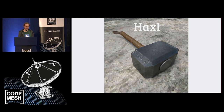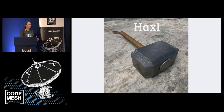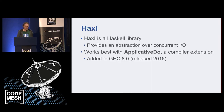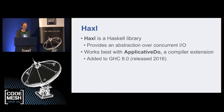The framework I'm talking about, Haxl, has the characteristics of a big hammer. It's going to solve the problem of concurrency and also help with testing and debugging — and you're going to have to go to some effort to use it. Haxl is a Haskell library that provides an abstraction over concurrent I/O. It also works in conjunction with something implemented in the Haskell compiler called the Applicative Do extension.